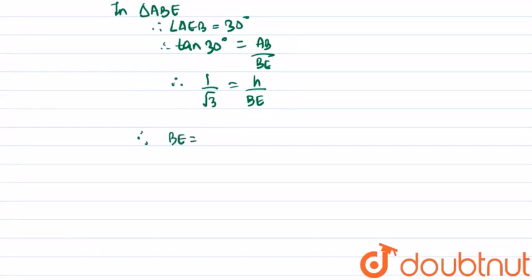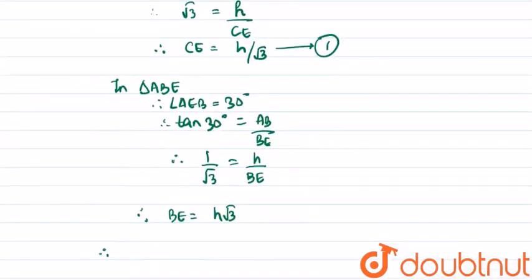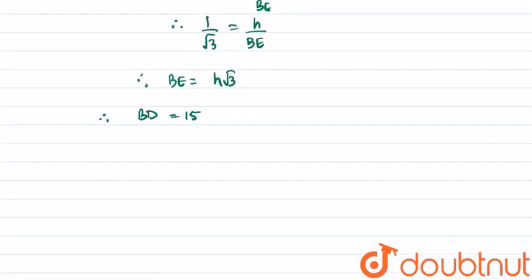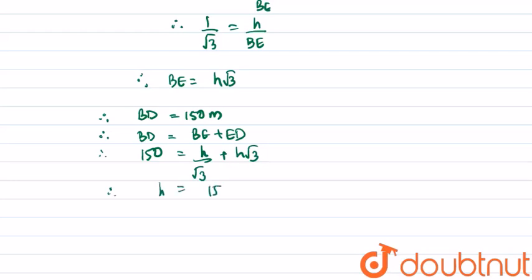Now we know that the distance between the two pillars, BD, equals 150 meters. Therefore BD equals BE plus ED. Therefore 150 equals h root 3 plus h upon root 3. Therefore the value of h we find is 150 into root 3 upon 4. Therefore height we found is 64.95 meters.